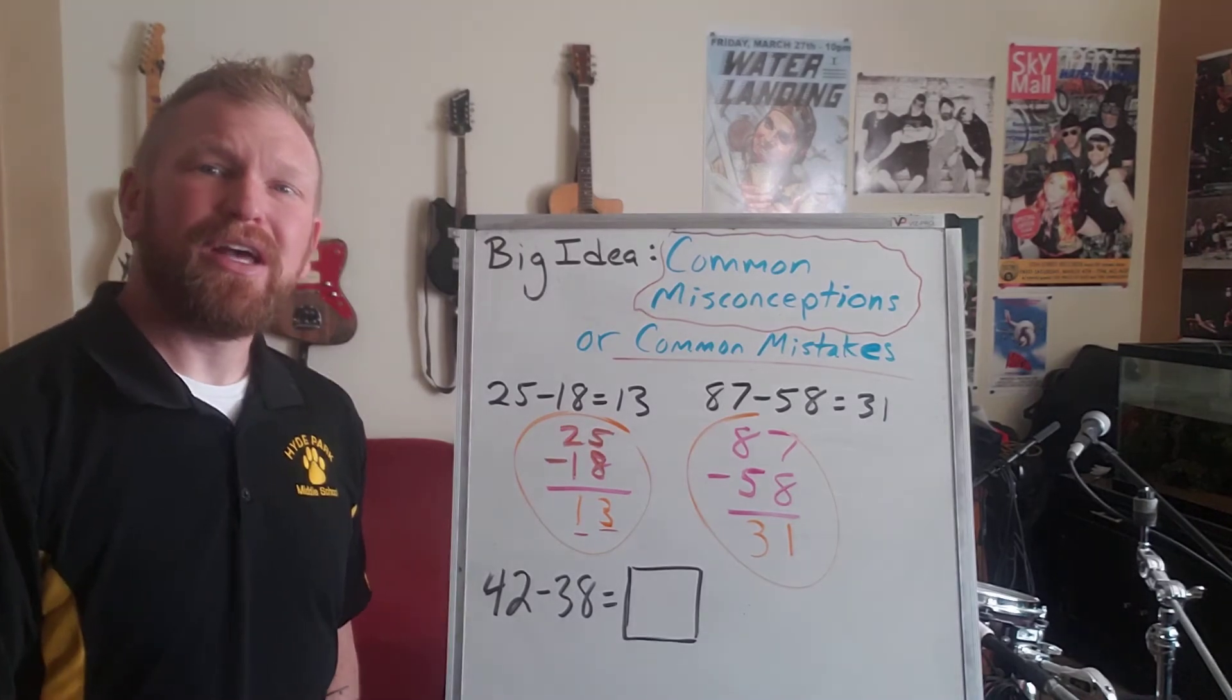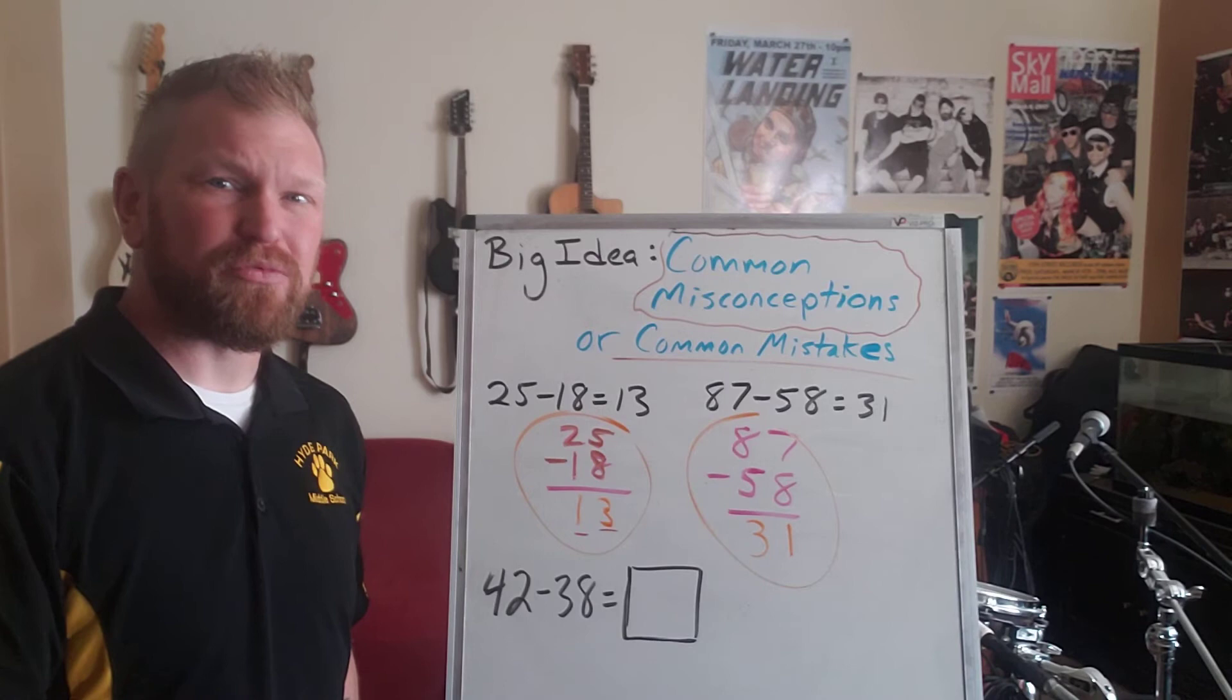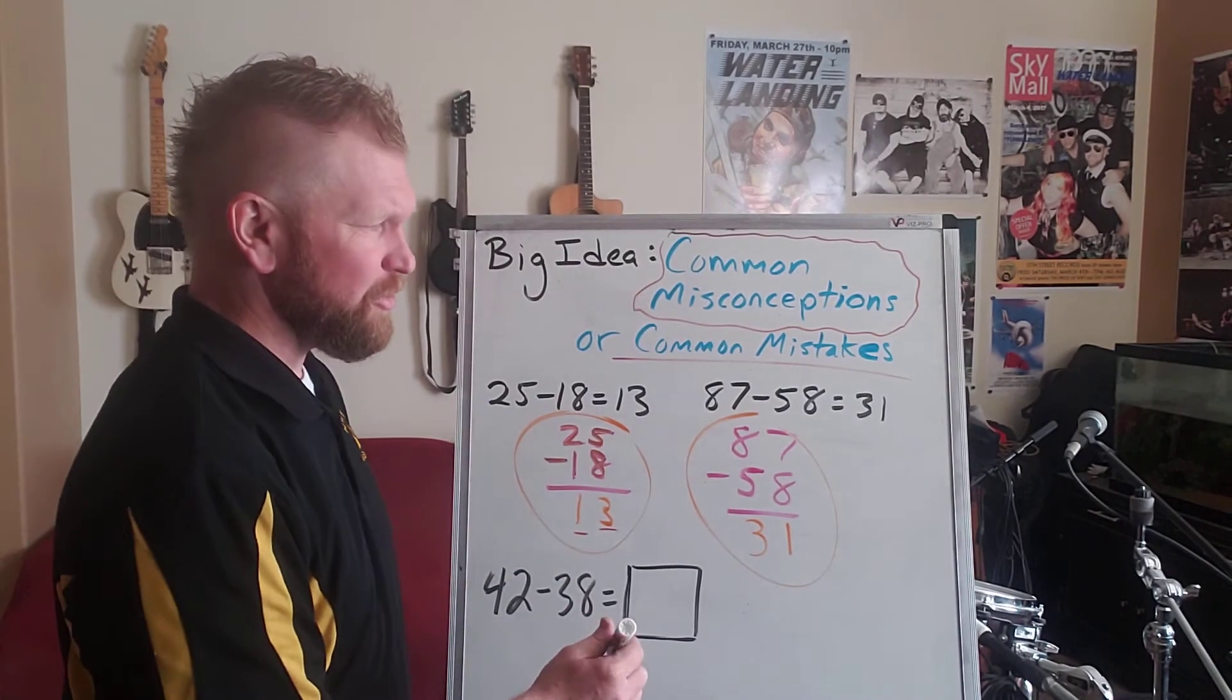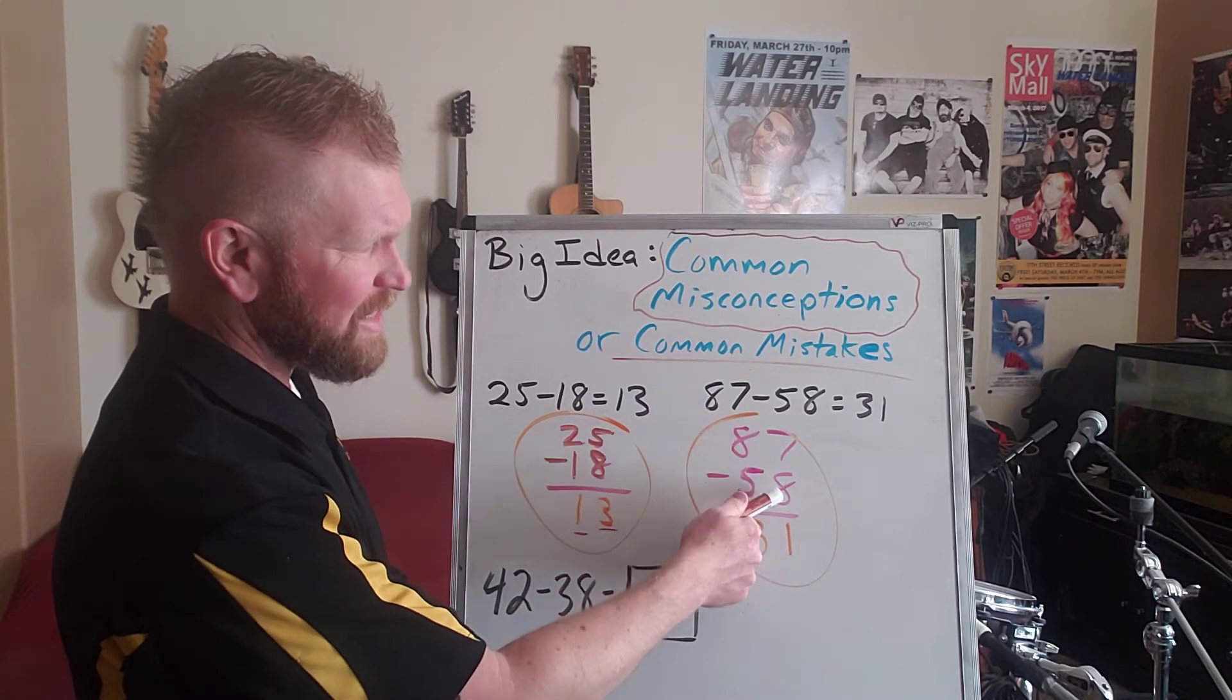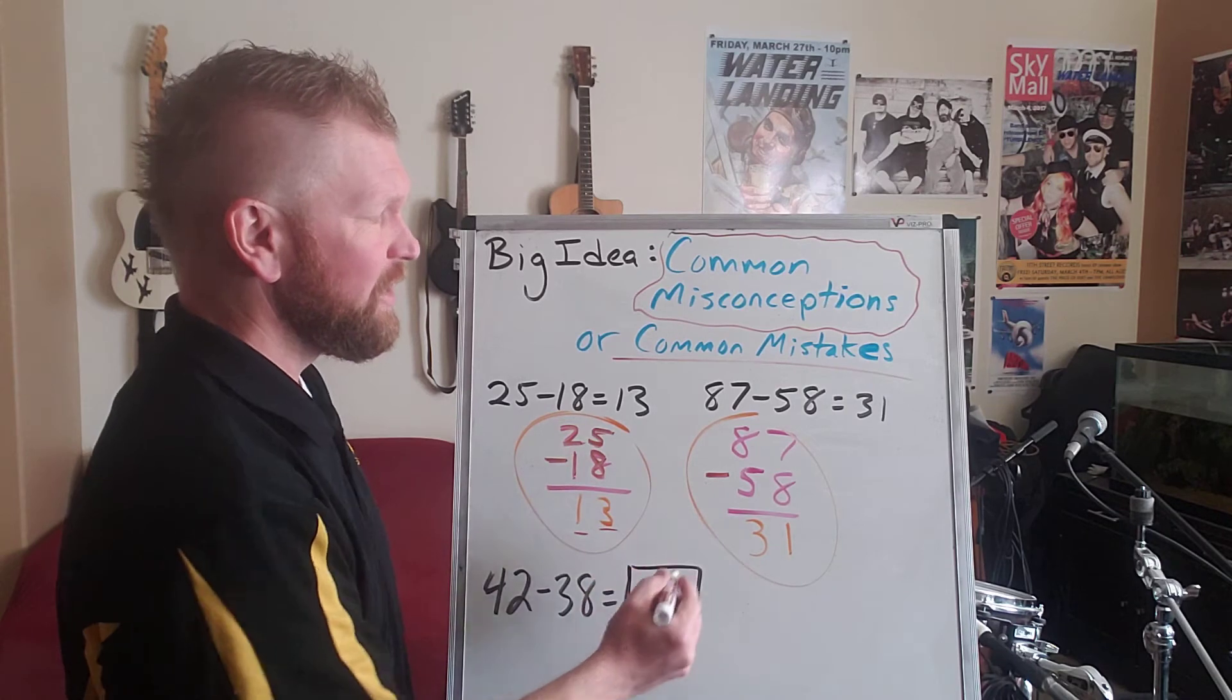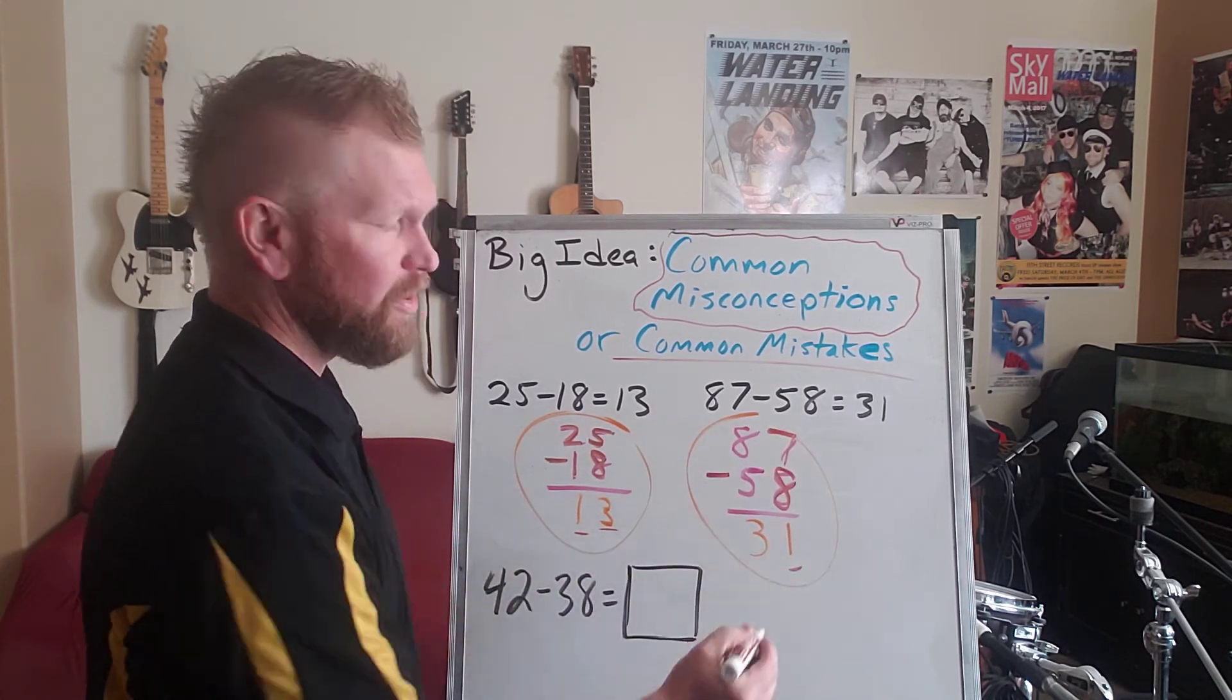They're not regrouping. They're not using borrowing. All they're doing is thinking about the operation of subtraction, but not really thinking how it applies to these specific numbers. For example, you can't really subtract 7 take away 8. You would need to use regrouping. But this student is seeing the subtraction symbol, and they're actually thinking, what is 8 subtract 7? That's 1.